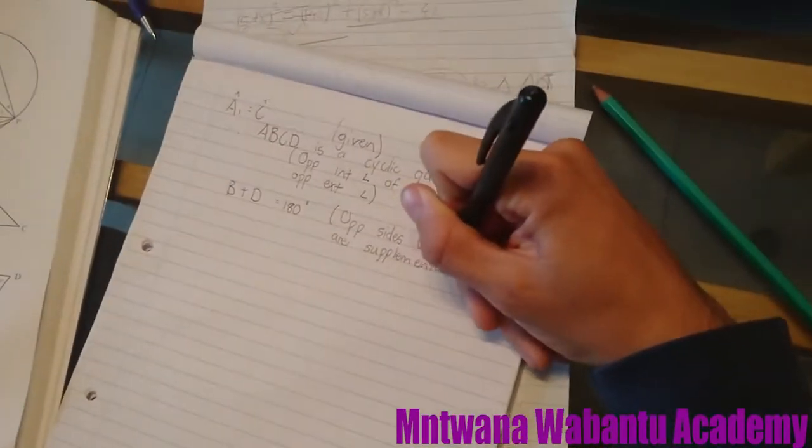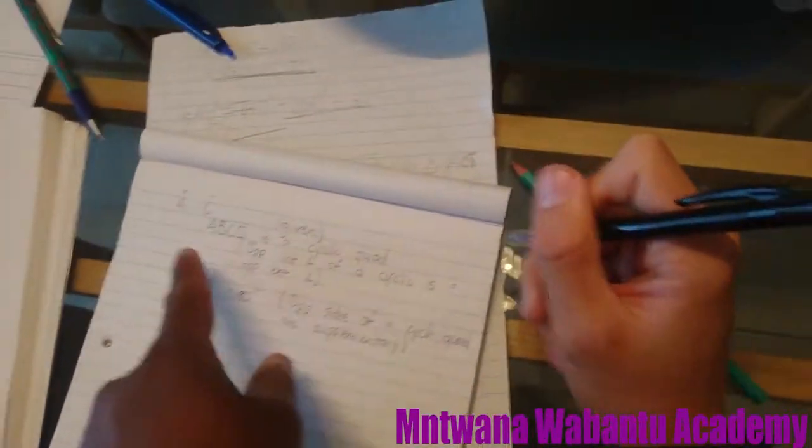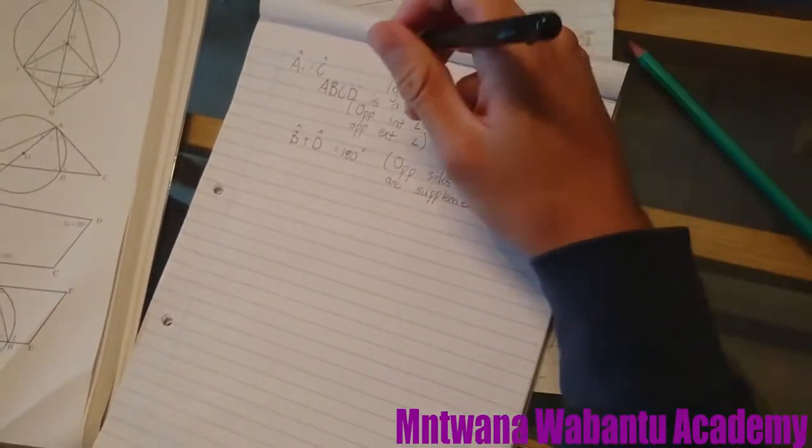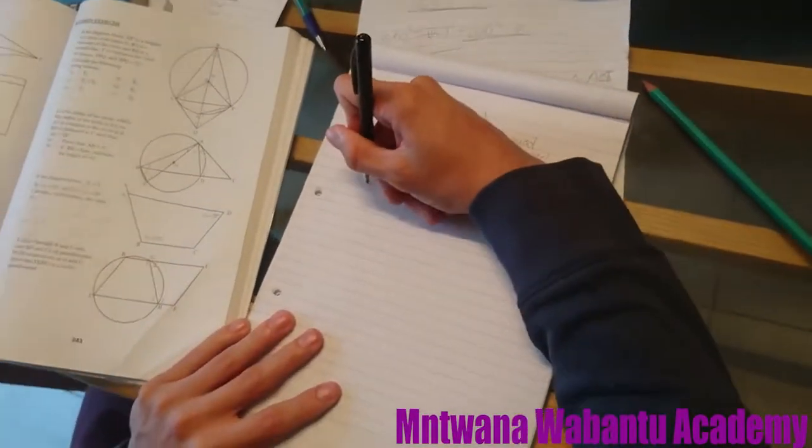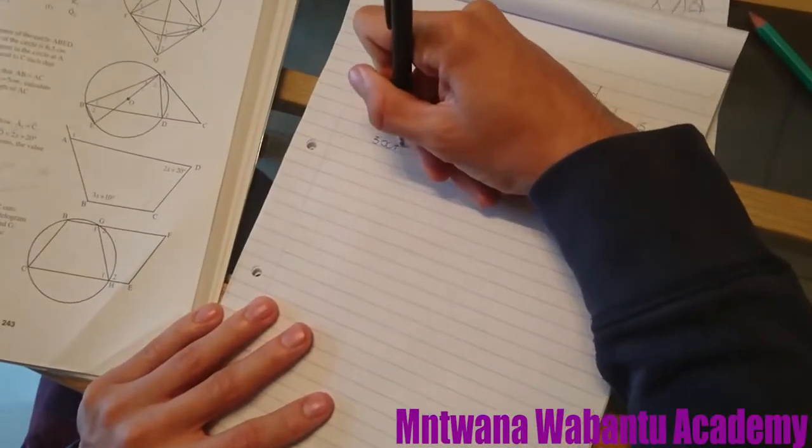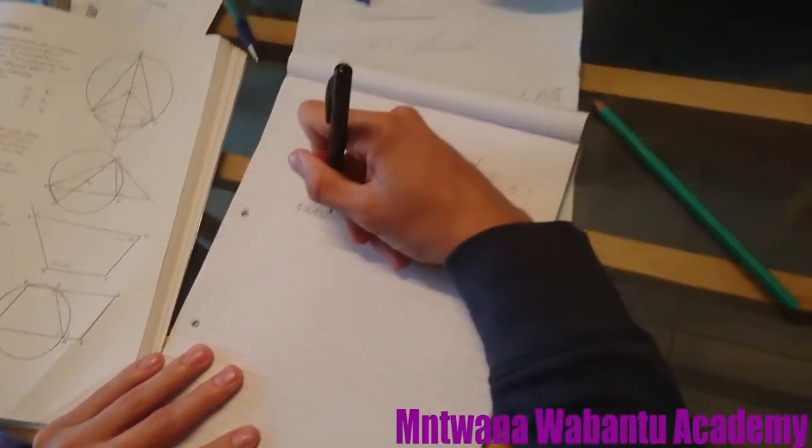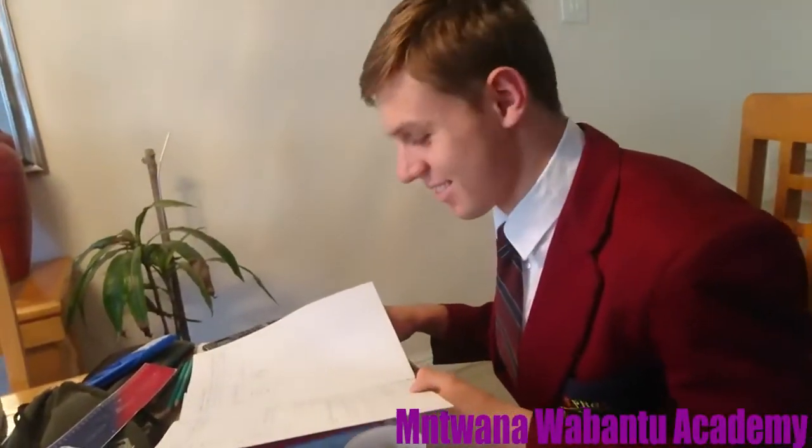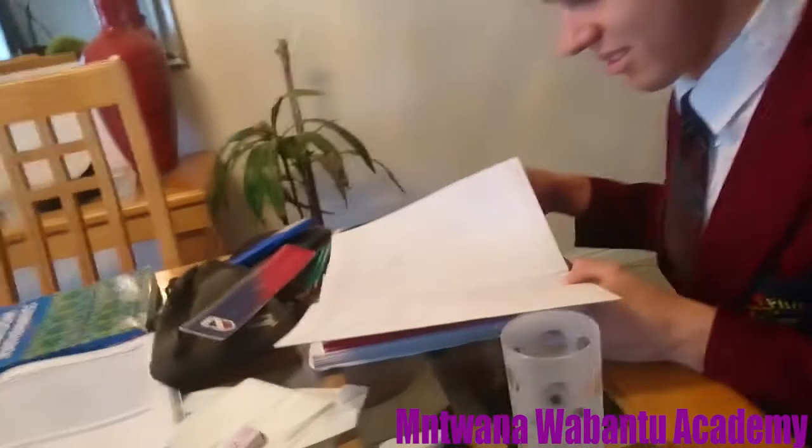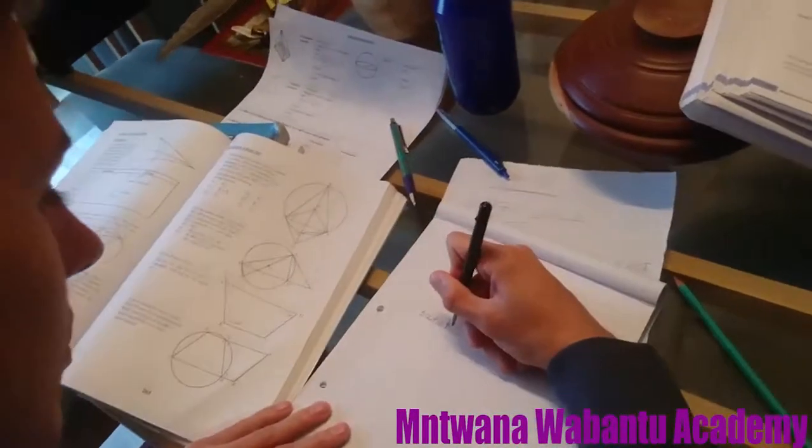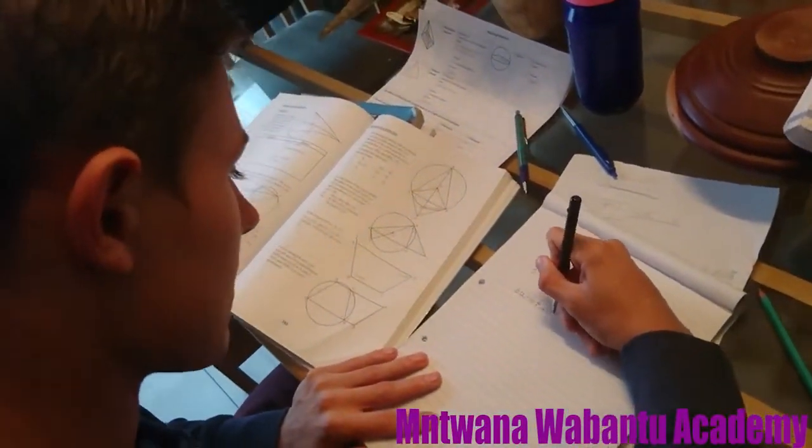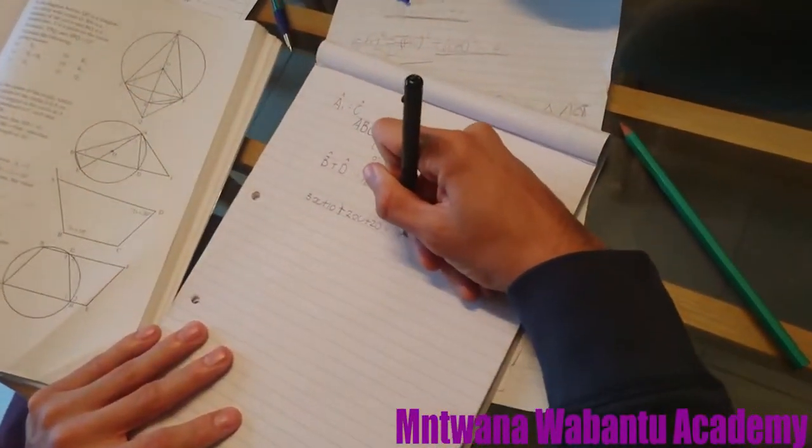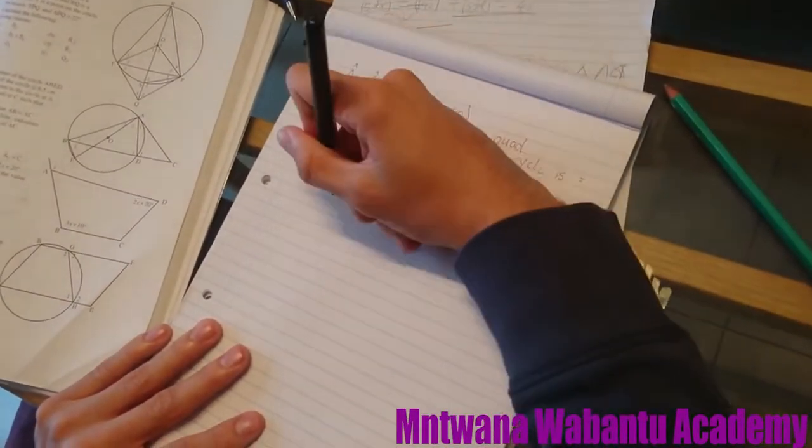So they want us to calculate x and here we've given variables. So surely if it's a cyclic quad, then B plus D would be supplementary. So B plus D is equal to 180 degrees. Opposite sides of the cyclic quad are supplementary. Therefore 3x plus 10 which is angle B plus 2x plus 20 is going to be equal to 180 degrees.